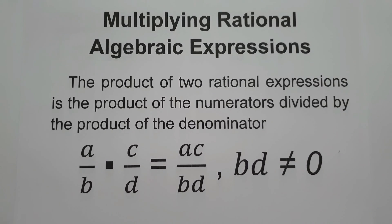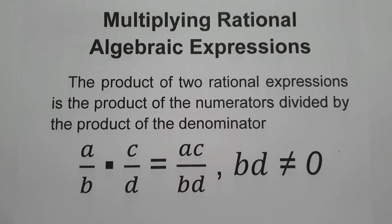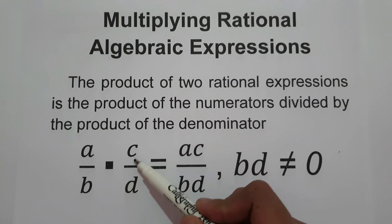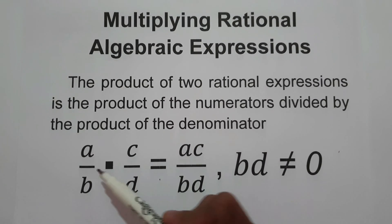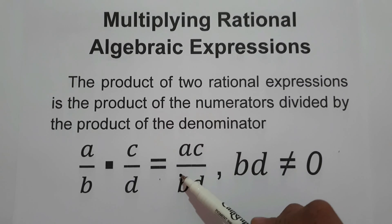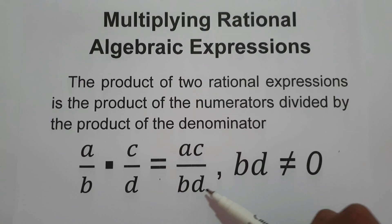For today's video, we are going to talk about how to multiply rational algebraic expressions. The product of two rational expressions is the product of the numerators divided by the product of the denominators. In short, we simply multiply numerator to numerator and denominator to denominator. In symbol: a/b × c/d = ac/bd, where bd is not equal to zero.